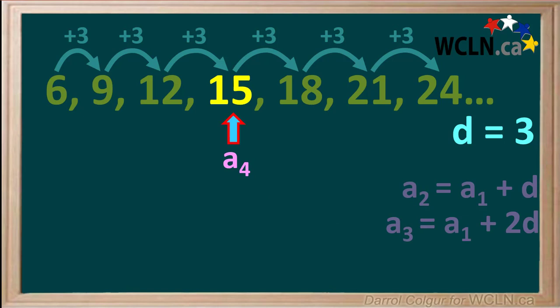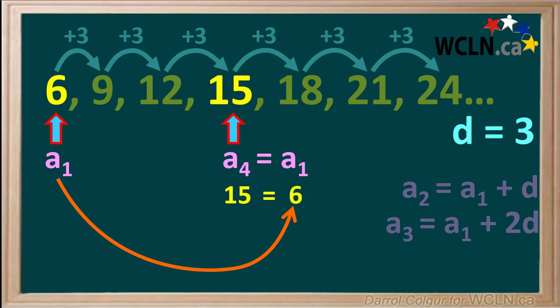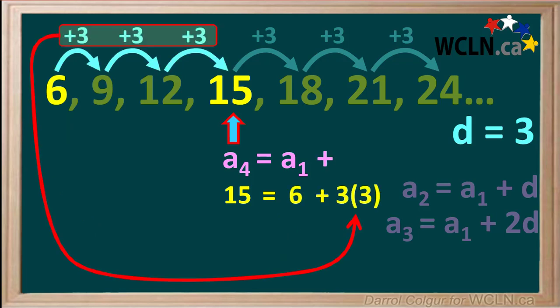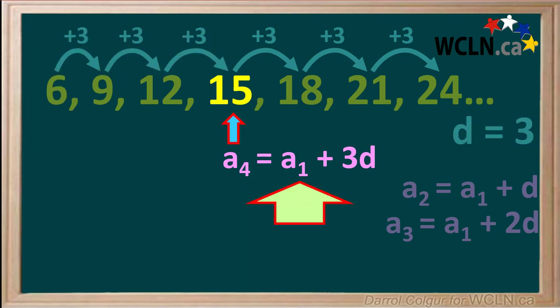Now let's look at term 4, 15, which is the sum of term 1, 6, and 3 times 3, which is 3d. So term 4 is a1 plus 3d, which we'll make a note of down here.